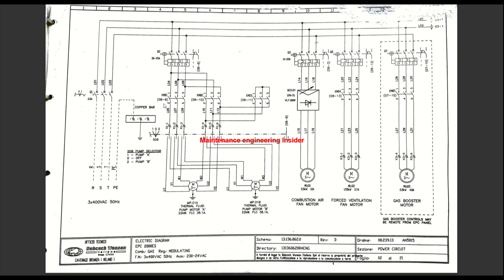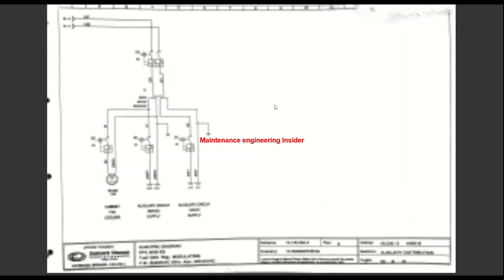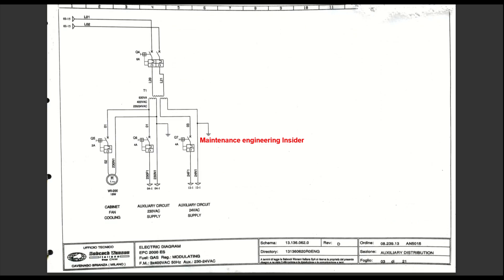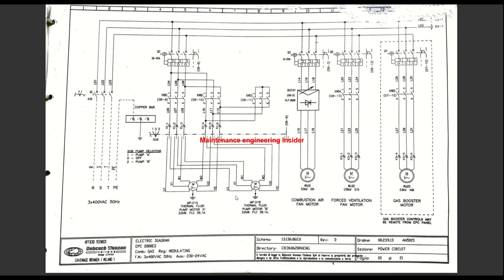If we go to sheet 8, we'll find more information about KM1, KM2, and KM3. Currently we are on sheet 3 of 21, but we need to work on sheet 8 of 21.